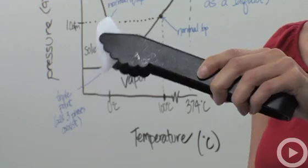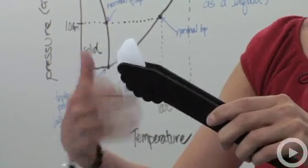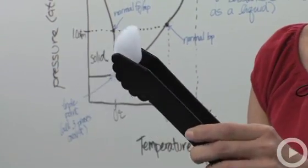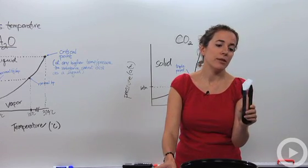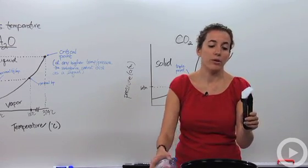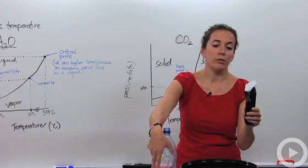And this is used sometimes in like movie studios to make that gaseous appearance. So if you notice, it goes straight from the solid state, skipping the liquid state, going straight to the gaseous state. We call this sublimation.